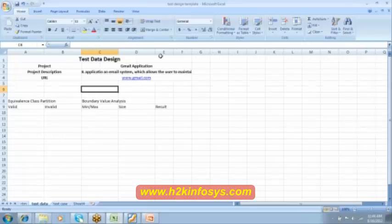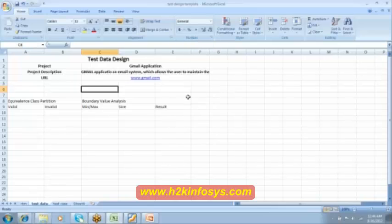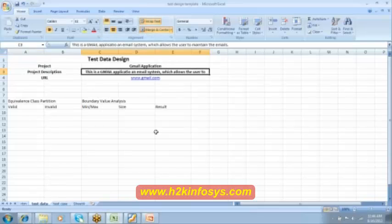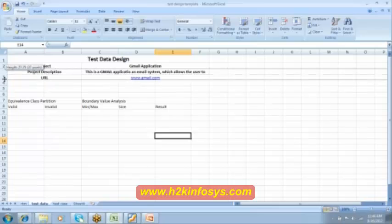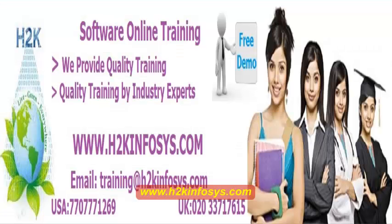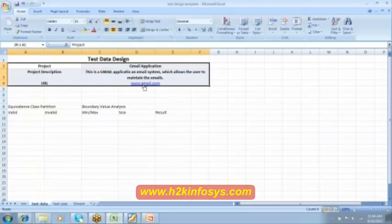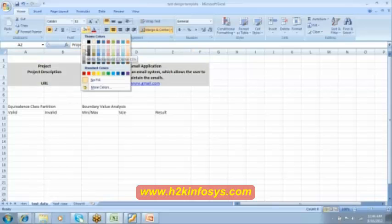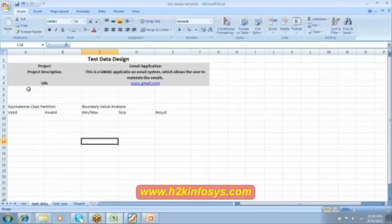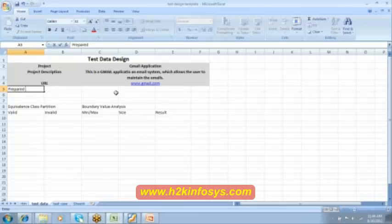And then boundary value analysis. So here we should have minimum and then maximum and then size then the result. Is it clear? This much. Let me resize it so that it looks more neat.